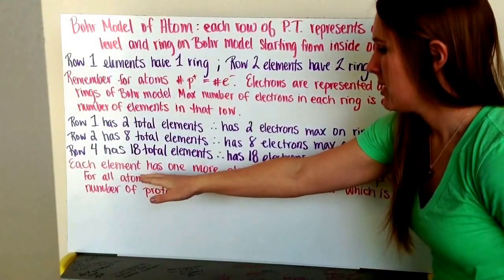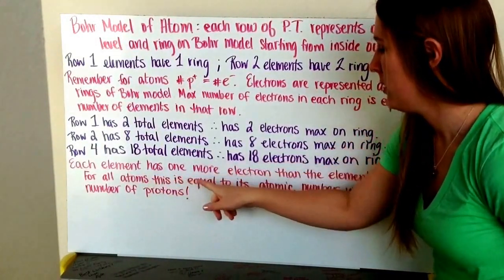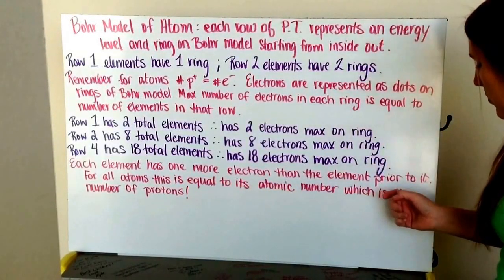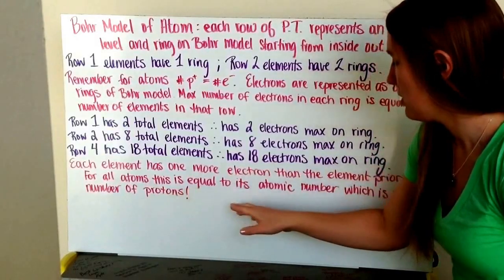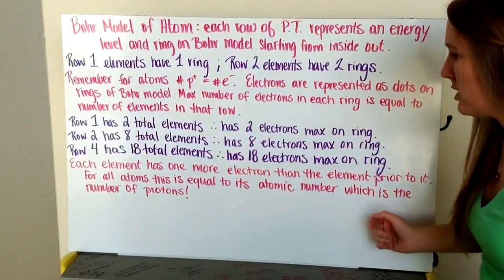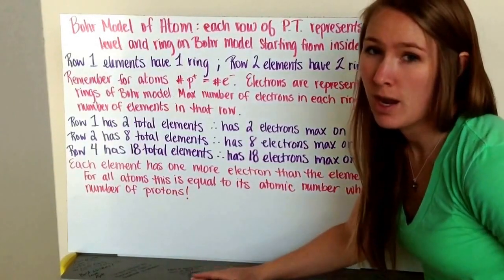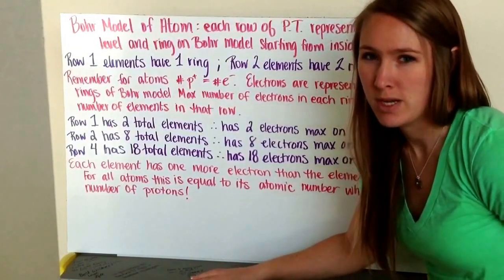For each element, it has one more electron than the element prior to it. So for all atoms, this is equal to the atomic number, which is the number of protons. So my number of electrons equals my number of protons for all atoms.